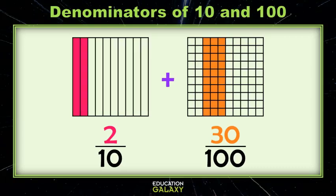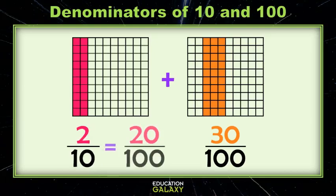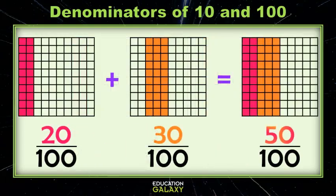In this case, if I want that 10 to look like that hundred, I'm going to need to multiply it by 10. And if I do it to the denominator, I do it to the numerator. So my two tenths magically becomes twenty hundredths. Now this is something we recognize and this is something we know how to add. No big deal.